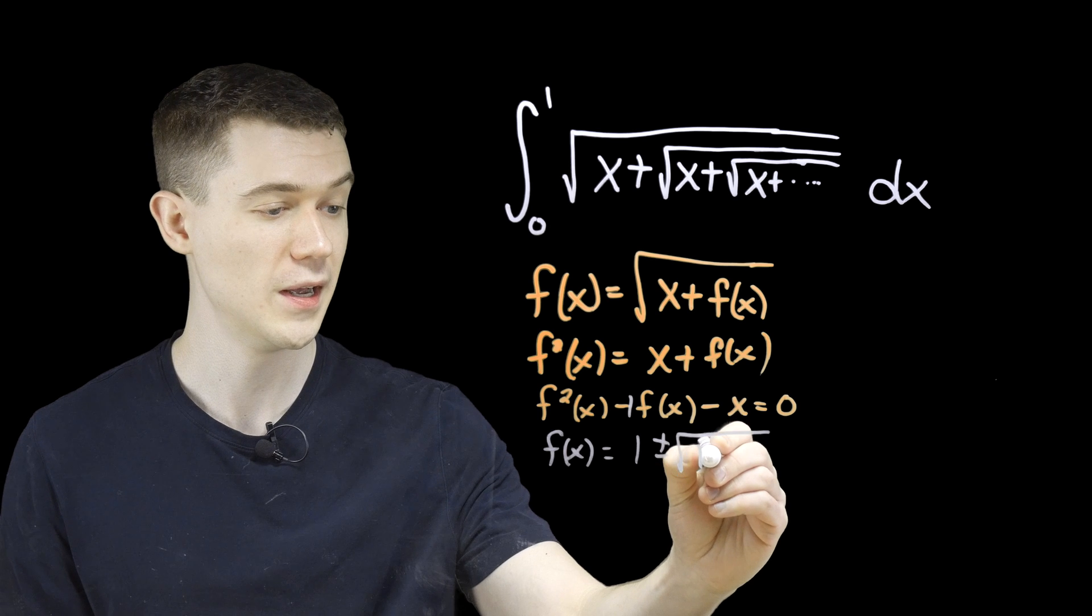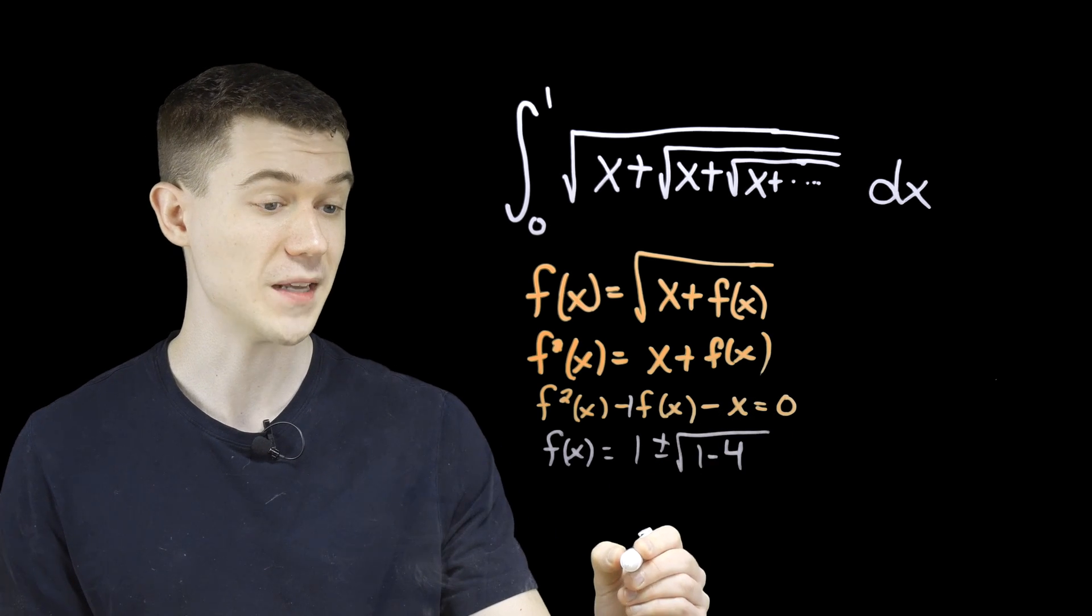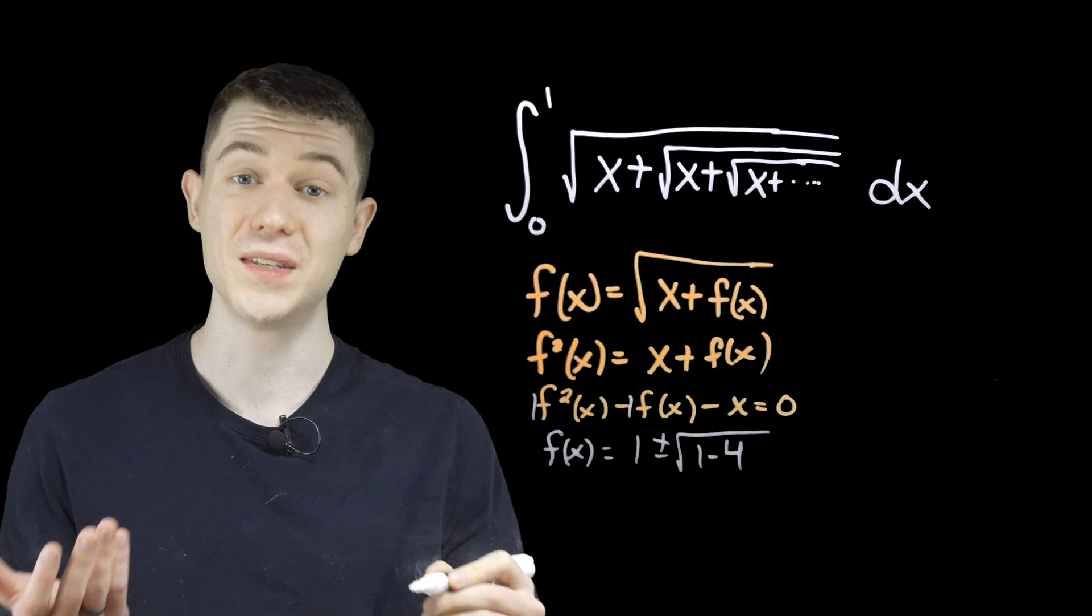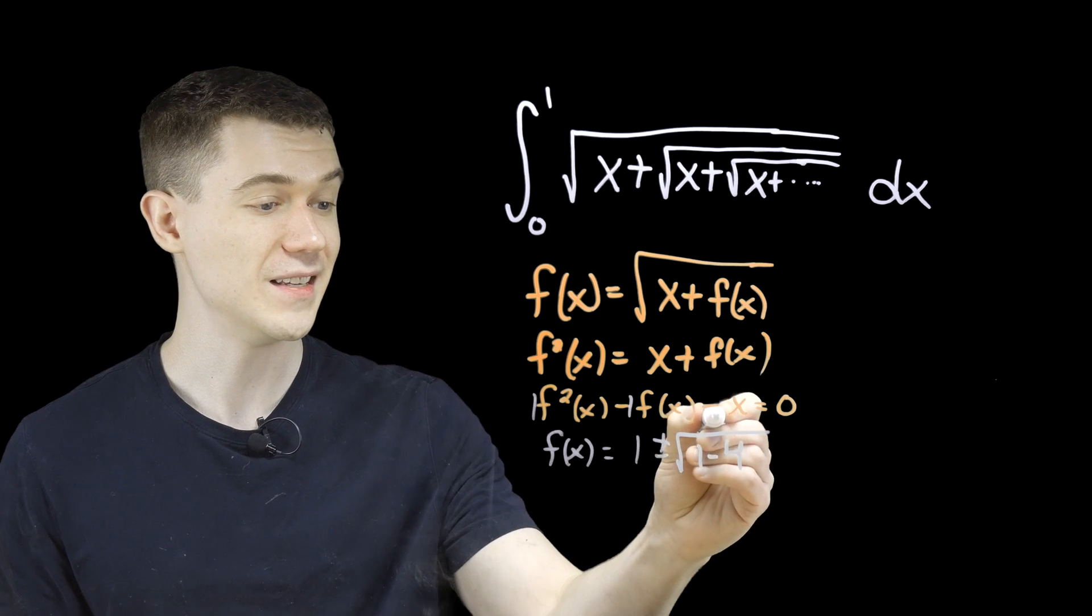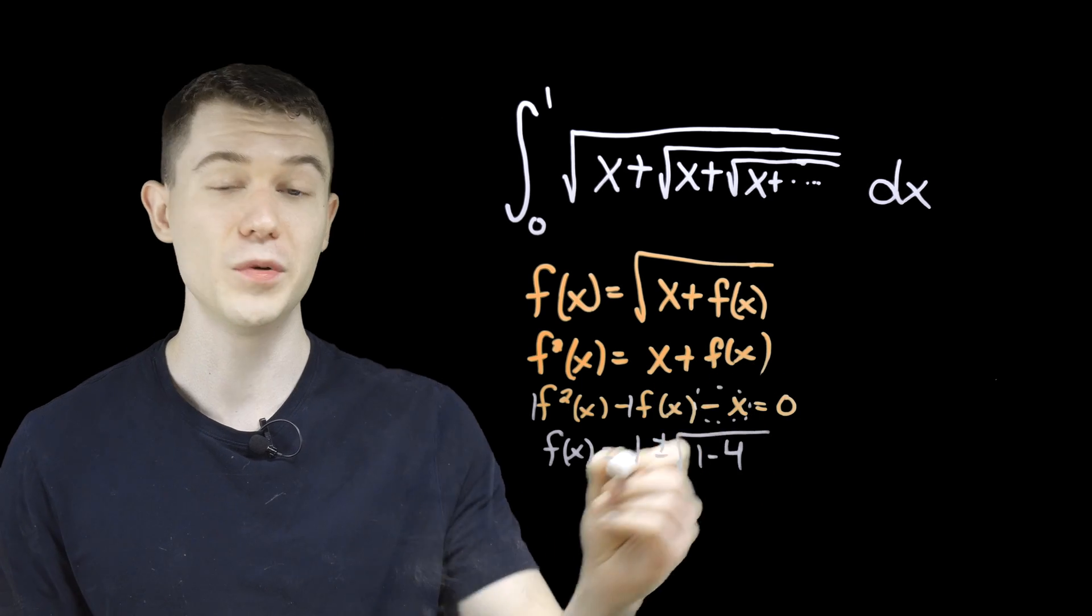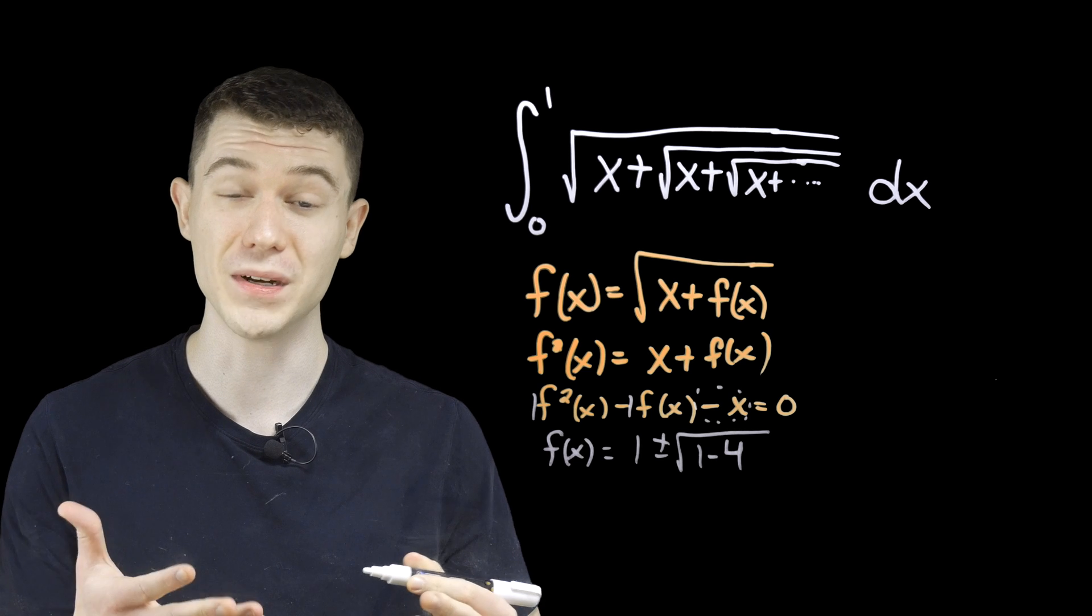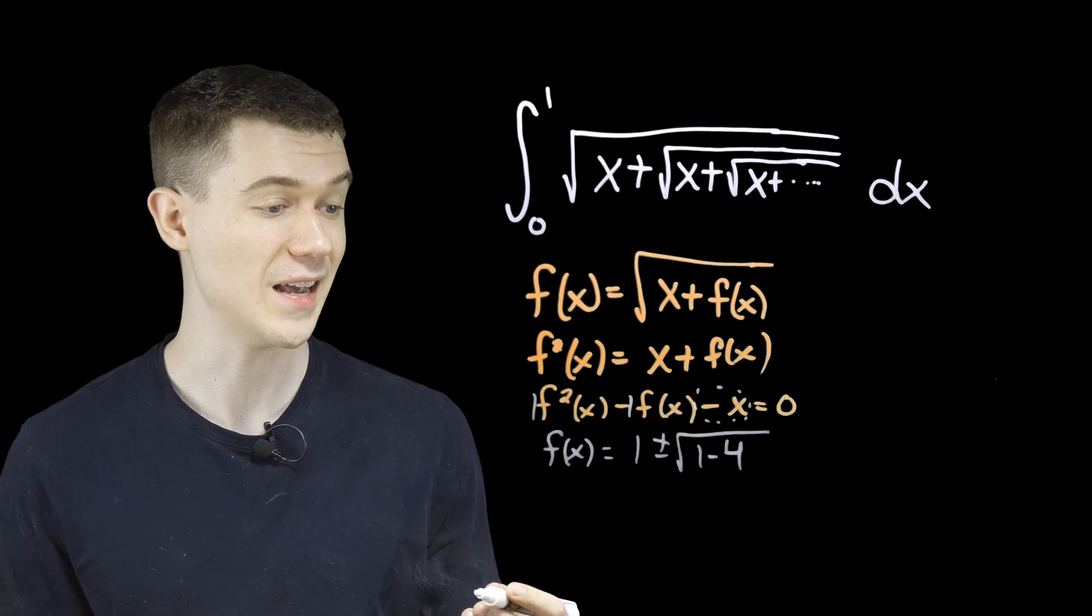So one squared is one, minus four times a, which in this case is one, times c. Well, c is negative x. Typically we think of c as the constant term, but here c is actually the variable minus x.